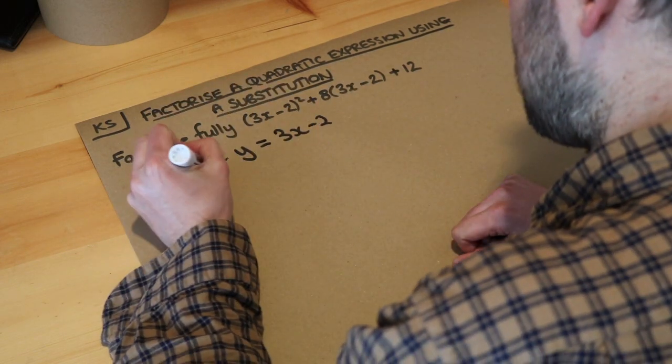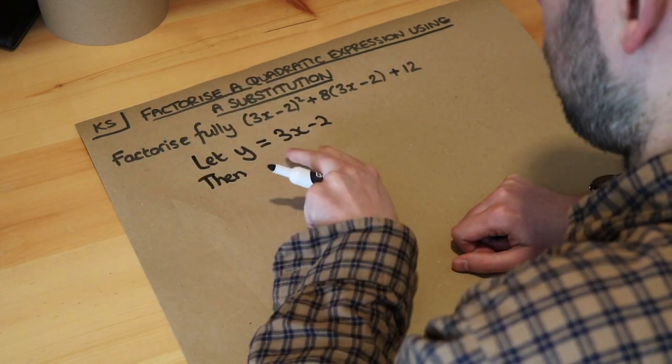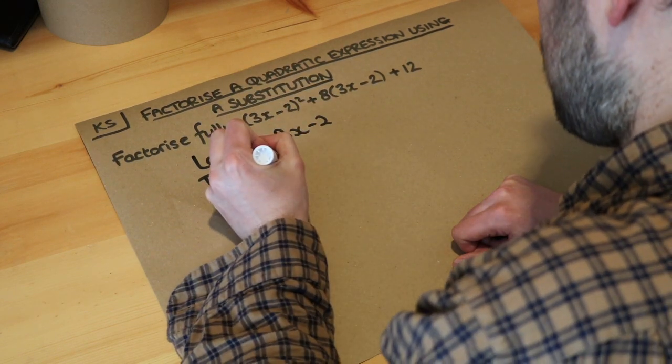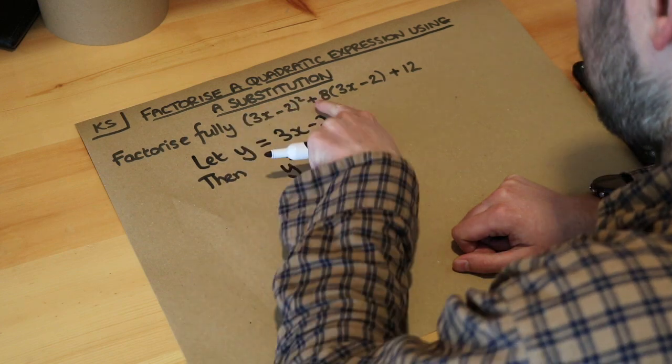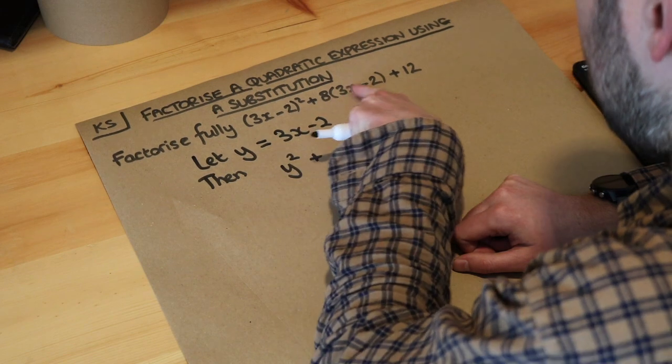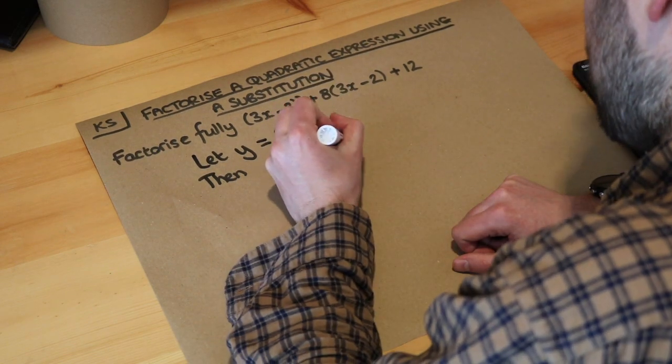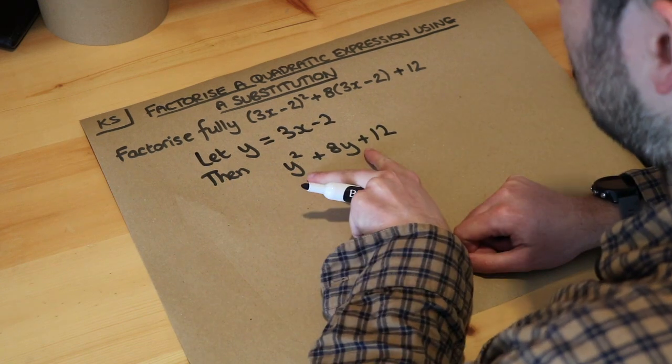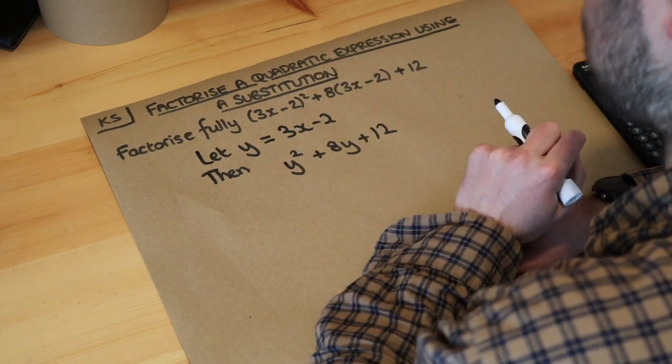So then we get y squared plus 8 and then this thing here again is y so 8y plus 12. And this expression is nicer because this is much easier to factorise than the original expression.